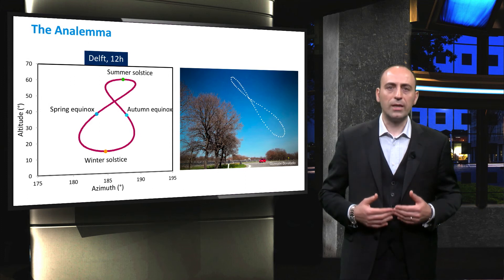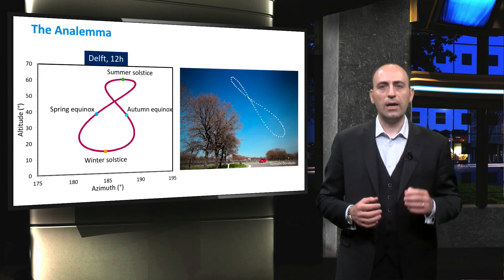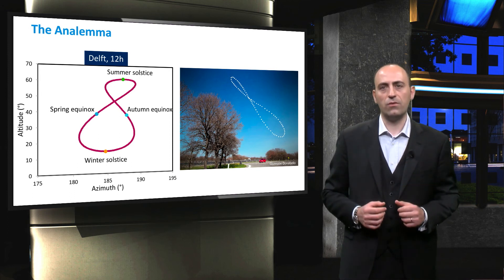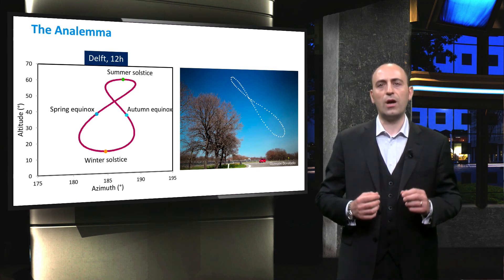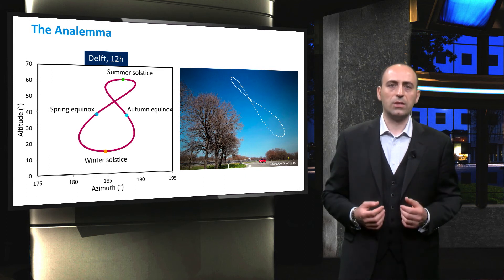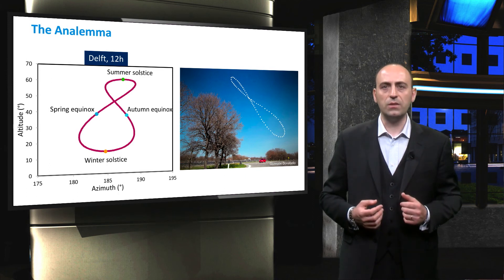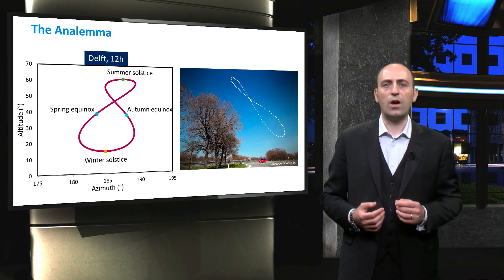Now that we know how to calculate the azimuth and altitude, it is possible to trace the analemma. In Greek language, analemma means the pedestal of the sundial, and it is a diagram that indicates the position of the Sun when observed at the same time every day. Indeed, due to the Earth's axial tilt and orbital eccentricity, the Sun will not be in the same position in the sky at the same time every day.